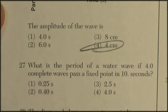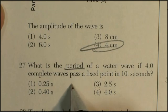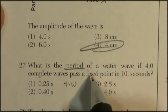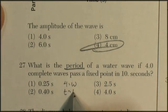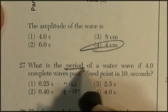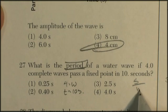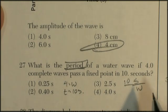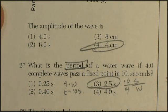Question 27: What is the period of a water wave if 4 waves pass a fixed point in 10 seconds? Time is 10 seconds. The definition of period is seconds per wave. We've got 10 seconds divided by 4 waves, so that's about 2.5 seconds each.